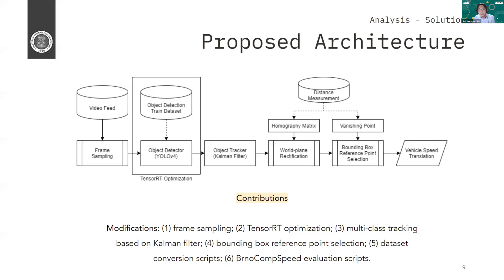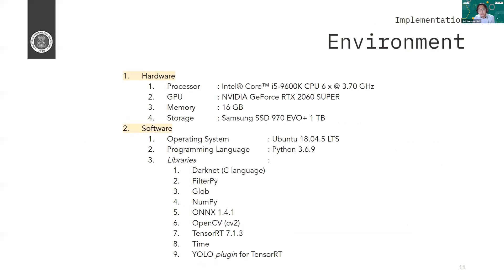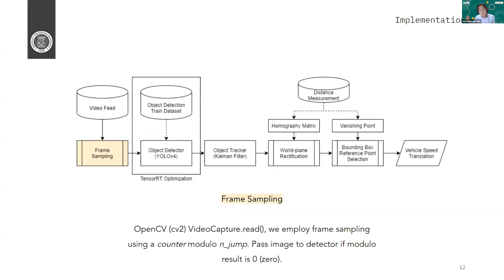So next we are going to the implementation section. Here is the environment for conducting the research. So first part of our architecture is the frame sampling. The idea is actually very simple. We use a counter for every frame. So first frame, we have n as one for the first frame and then two for the second frame. And then we skip frame if the modulo of the counter to a set variable n_jump is not zero. So for example, if we have the variable n_jump as five, then we only use the zero frame and then the fifth frame and then the tenth frame and so on. So basically we skip like four frames.